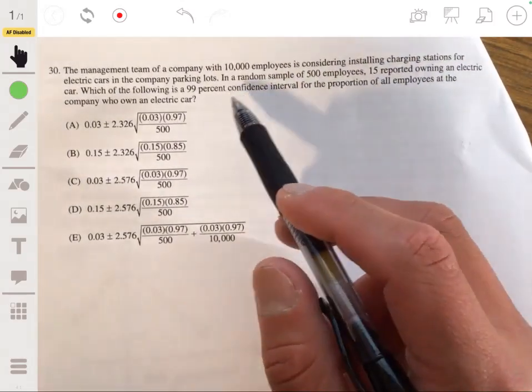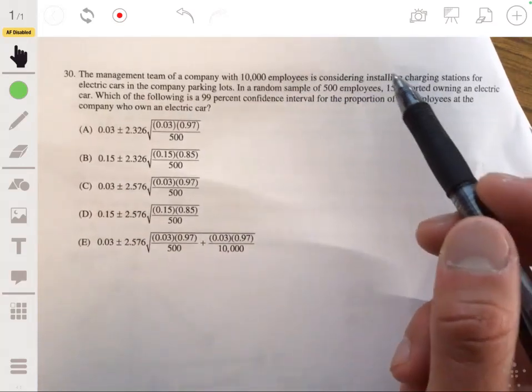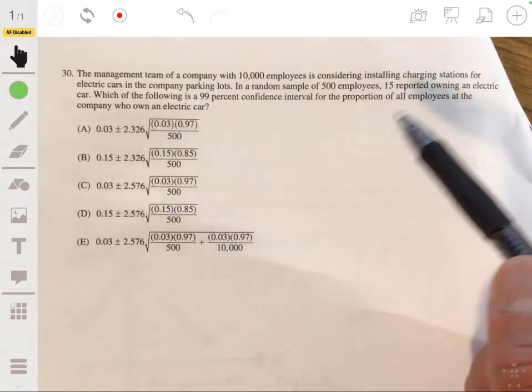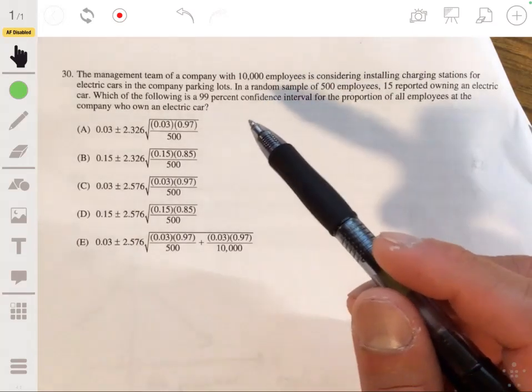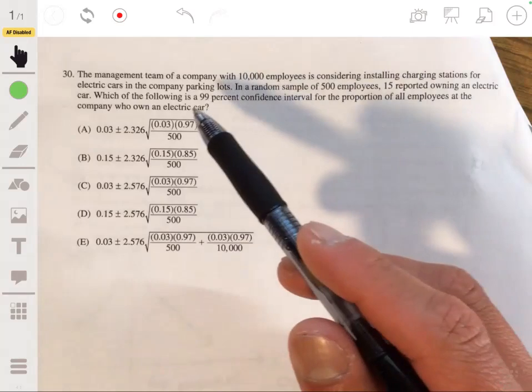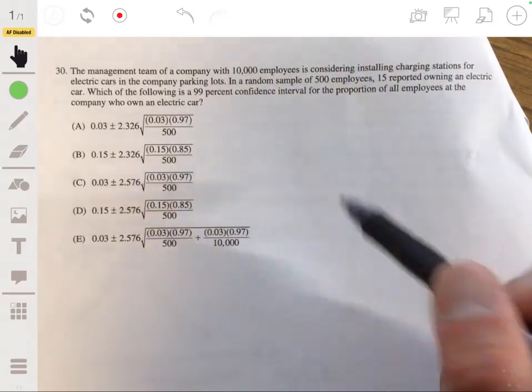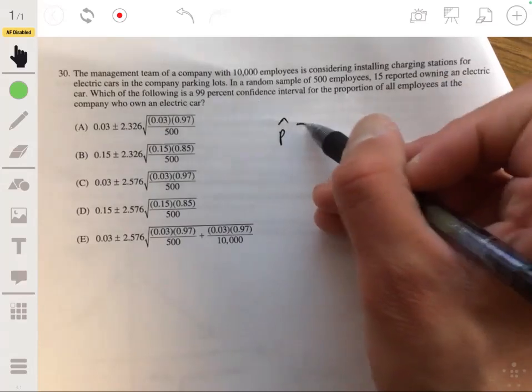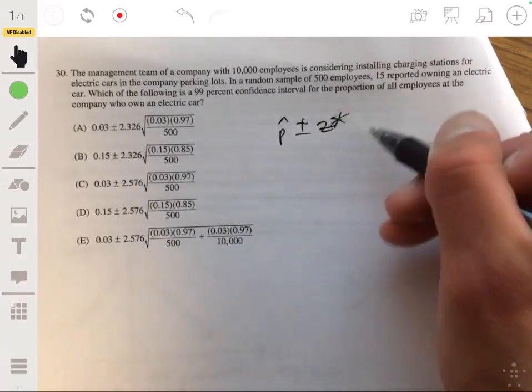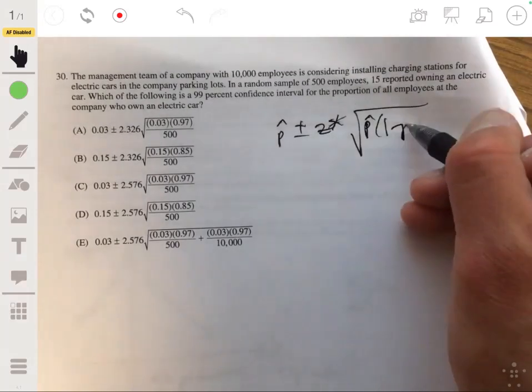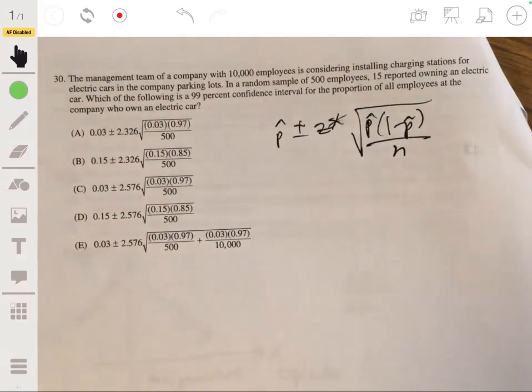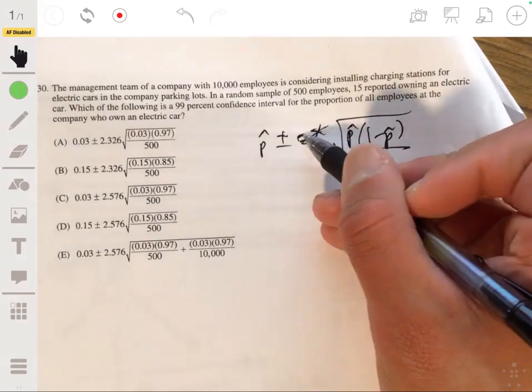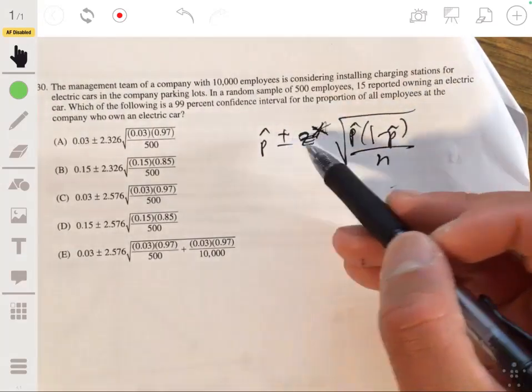All right, 30. The management team of a company with about 10,000 employees is considering installing charging stations for electric cars in the company parking lots. In a random sample of 500 employees, 15 reported owning an electric car. Which of the following is a 99% confidence interval for the portion of all employees at the company who own an electric car. Okay. So this is really just knowing the format of a confidence interval. So this will be P hat plus or minus your Z star, critical value times the standard deviation, which is P hat times one minus P hat over N. And again, this is given in your formula packet. You don't have to have this memorized. I've been doing this for hundreds of years. So then I pretty much have it down.